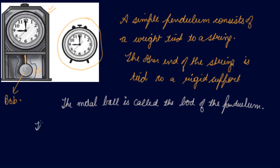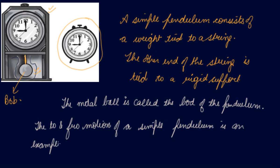The to and fro motion of a simple pendulum is an example of a periodic or oscillatory motion.